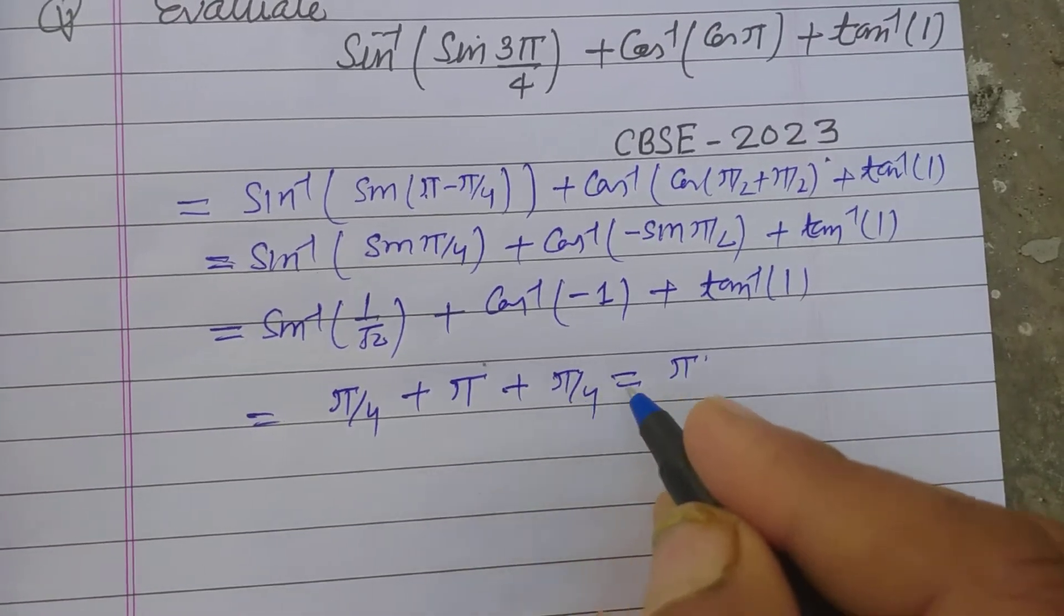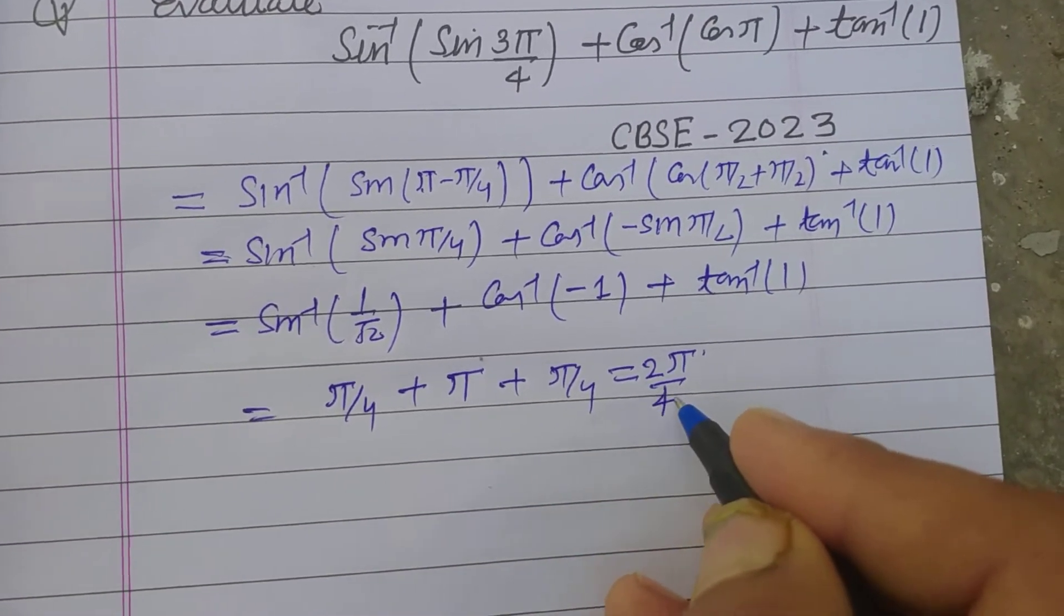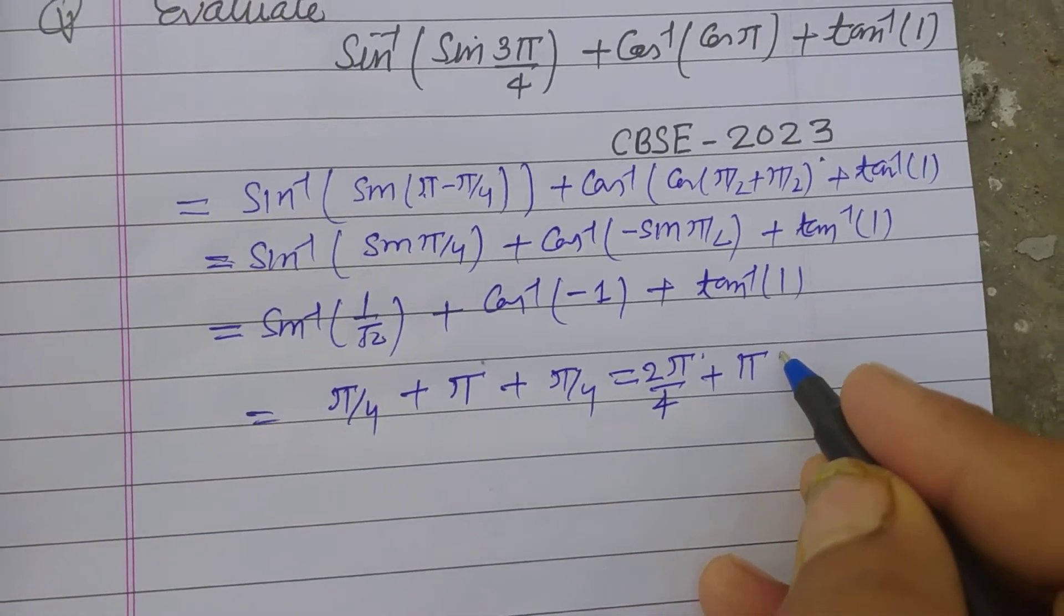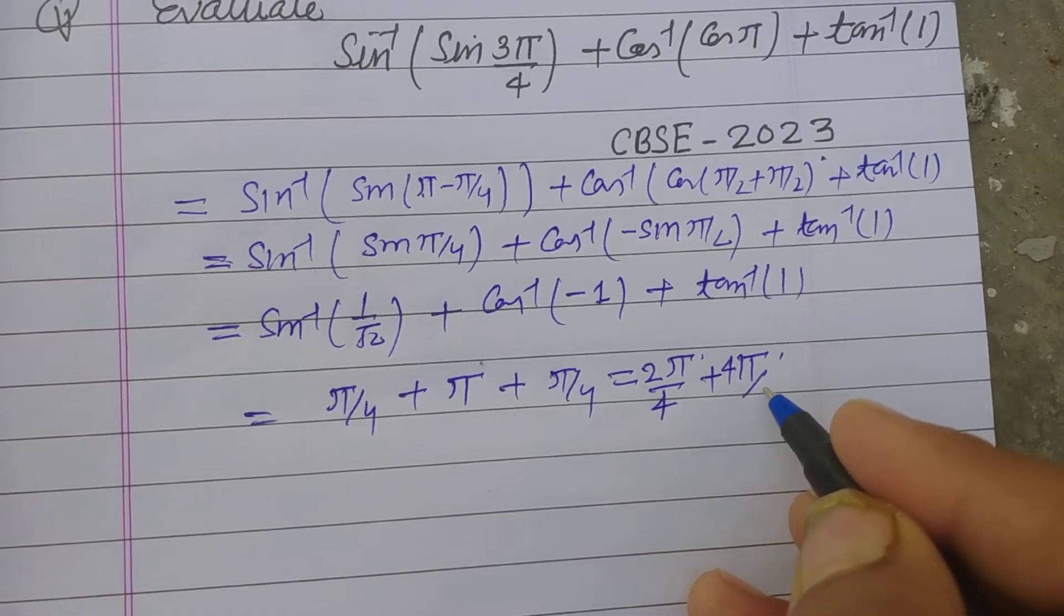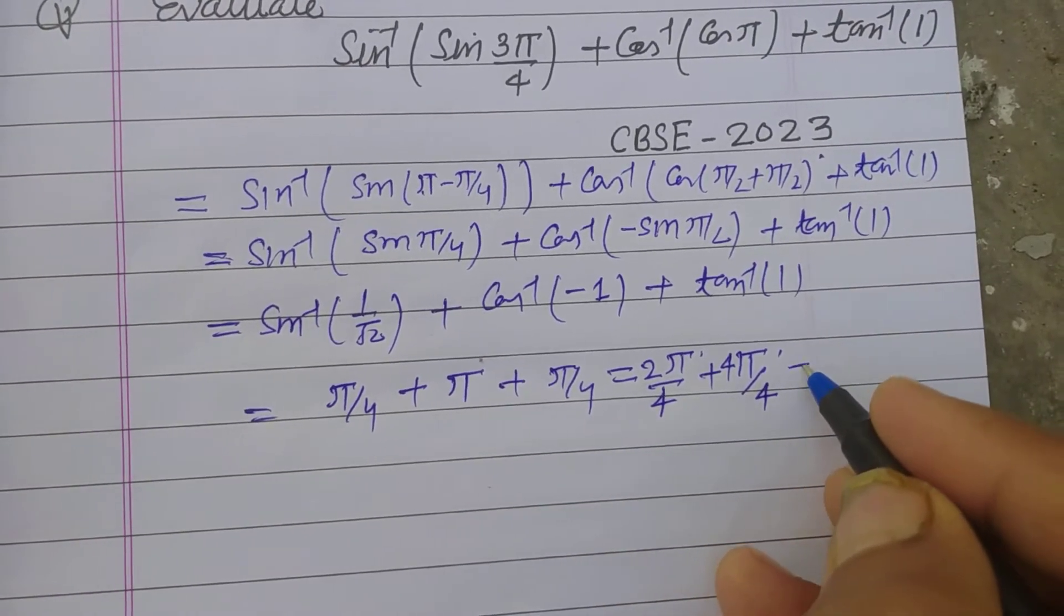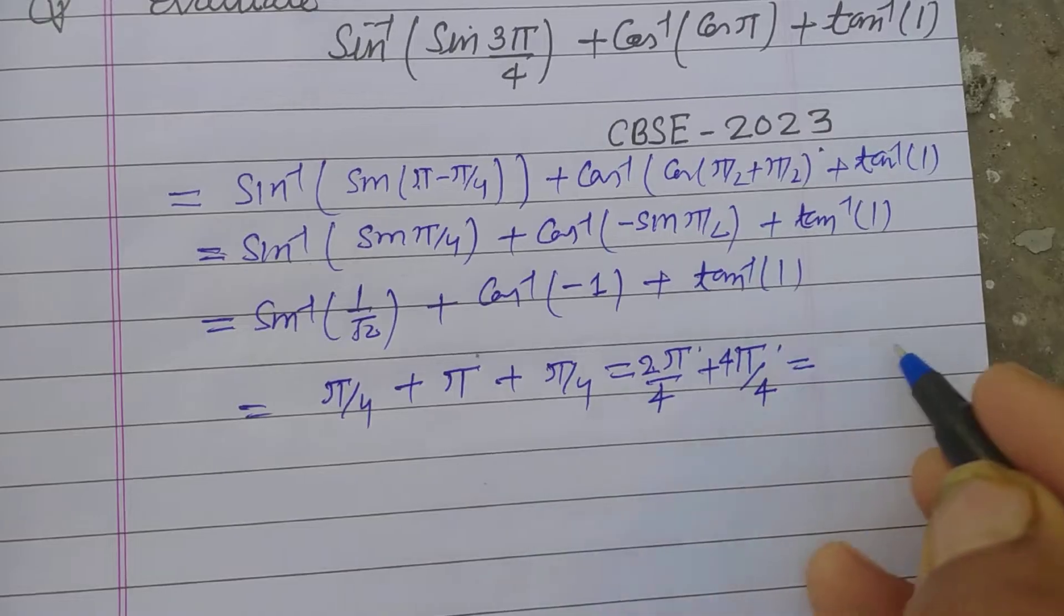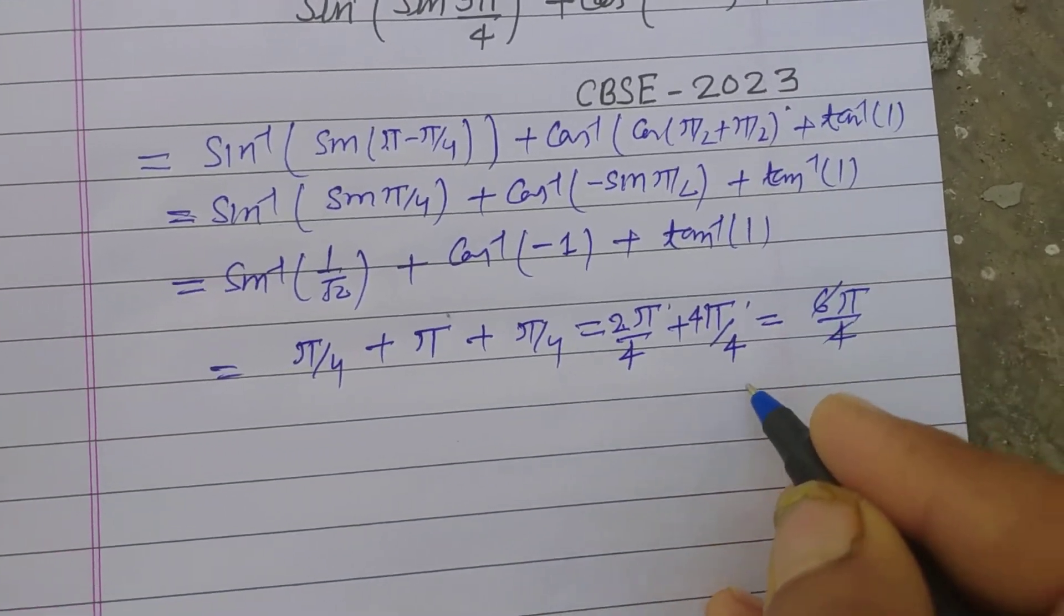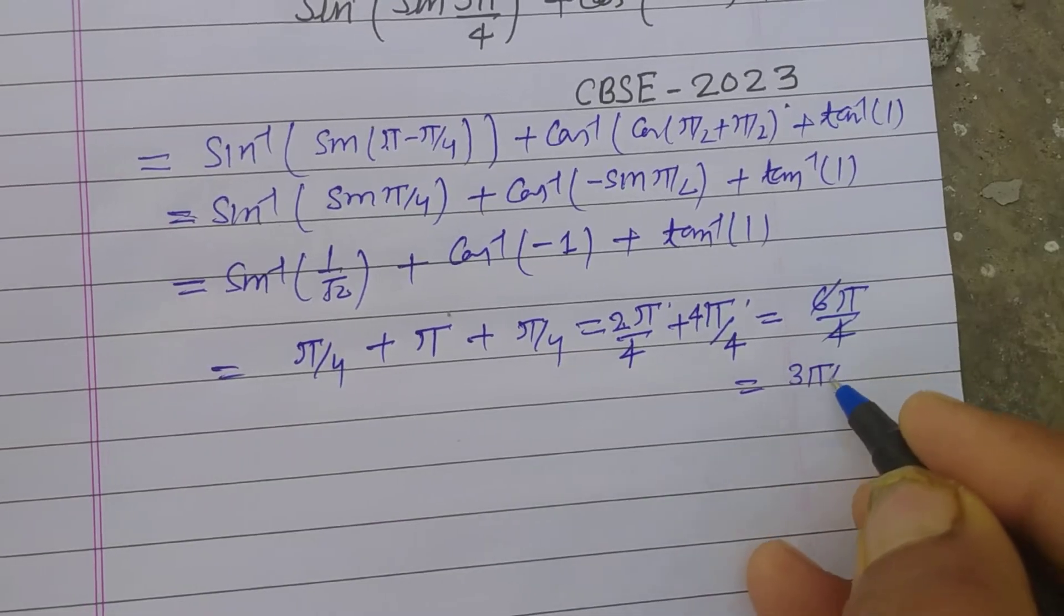So we write π/4 plus π plus π/4. This is 2π/4 plus π, which can also be written as 4π/4. And 4 plus 2 is 6π/4, and finally 3π/2.